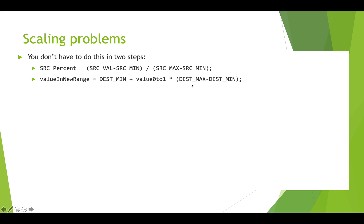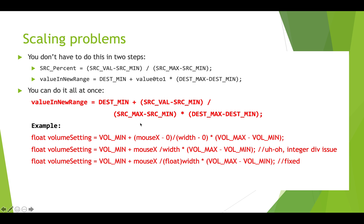You don't actually have to do this in two steps — you can combine them into one formula. The combined formula is: valueInNewRange = destinationMin + ((sourceValue - sourceMin) / (sourceMax - sourceMin)) * (destinationMax - destinationMin). For the mouse-to-volume example: volumeSetting = volumeMin + (mouseX - 0) / (width - 0) * (volumeMax - volumeMin). Again, watch out for integer division and cast appropriately.